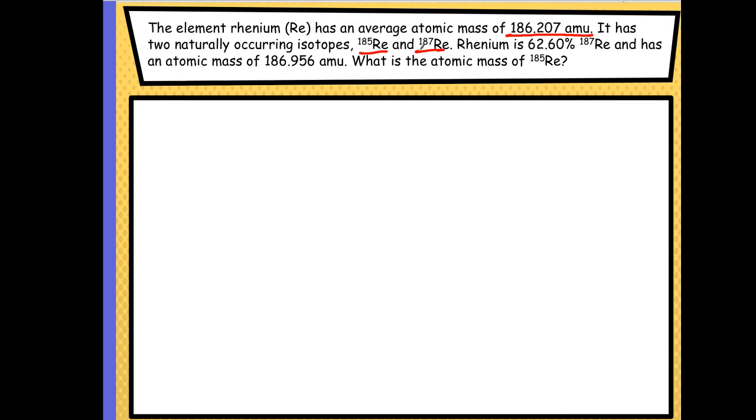Then, rhenium is 62.60% 187. I'll change this color over here. It has an atomic mass of 186.957, so this actually goes with this. They want to know what is the atomic mass of 185.